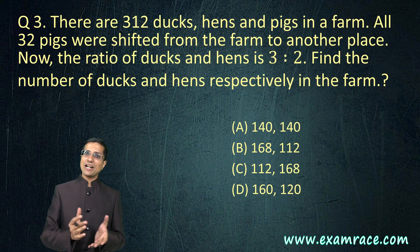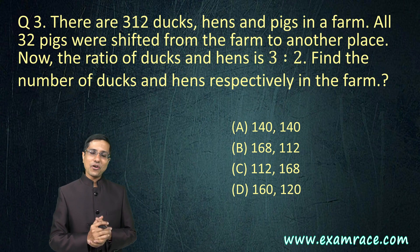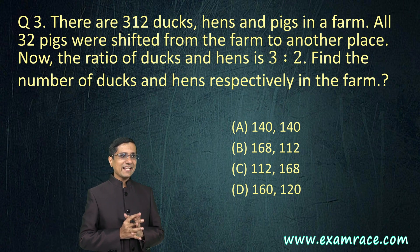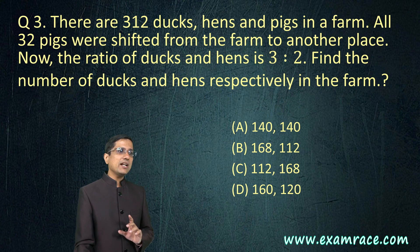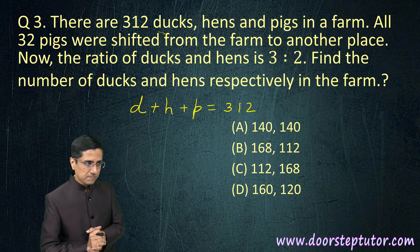This is a very good question. There are 312 ducks, hens and pigs in the farm. This is the total number - it doesn't mean there are 312 ducks. It is the total of ducks plus hens plus pigs. So we would write it as ducks plus hens plus pigs and the total comes out to be 312.